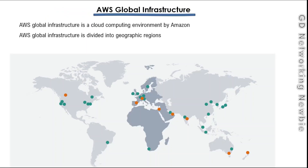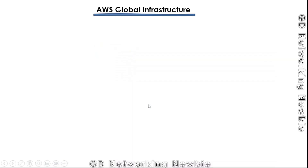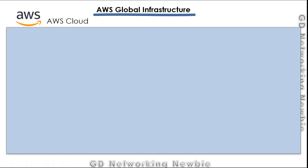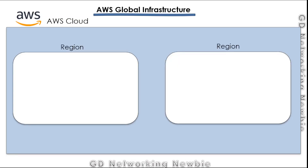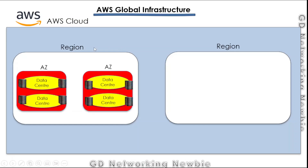Going back to our PowerPoint slides: this global infrastructure is divided into geographic regions, and those geographic regions are further divided into multiple availability zones. Just for illustration, let's say we have taken some portion of this AWS cloud showing maybe only two regions — for example one region in the US and another region in Australia. In those regions we have availability zones, labeled AZ, representing the different availability zones.